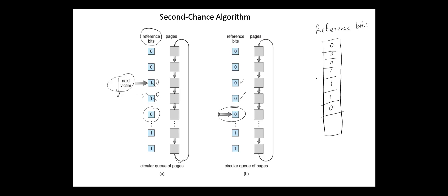Consider that we have the following reference bits for the page table entries and the pointer is here. Since the reference bit here is one, this page will not be selected as a victim, but its reference bit is cleared. The pointer is moved to the next reference bit — again it is one, so this page will not be selected as a victim and its reference bit is cleared. So the next page with a zero reference bit will be selected as a victim.